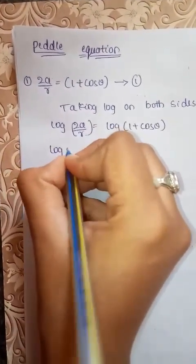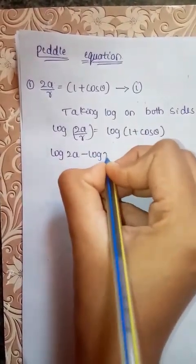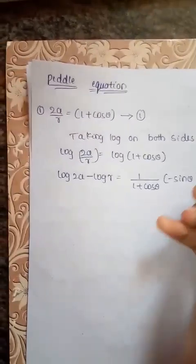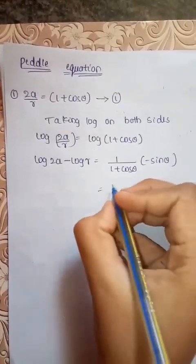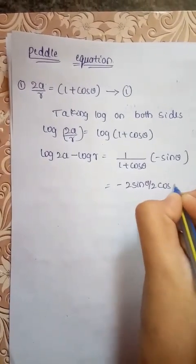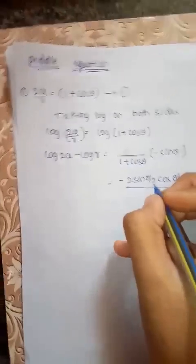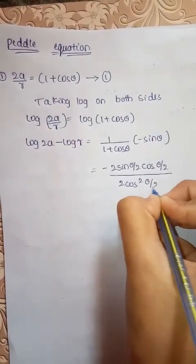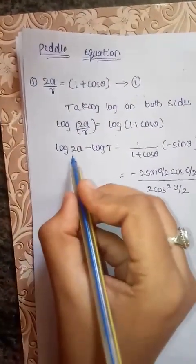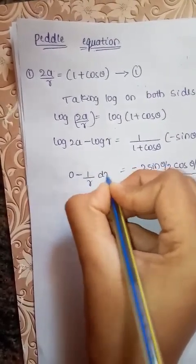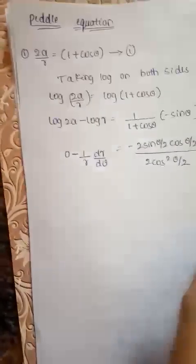Log(A/B) can be written as log A minus log B, which equals 1 divided by (1 plus cos theta) into minus sin theta. Sin theta can be written as minus 2 sin(theta/2) into cos(theta/2), and 1 plus cos theta can be written as 2 cos squared(theta/2). Log 2A equals 0 and log R can be written as (1/R)(dr/dθ) by differentiating with respect to theta.